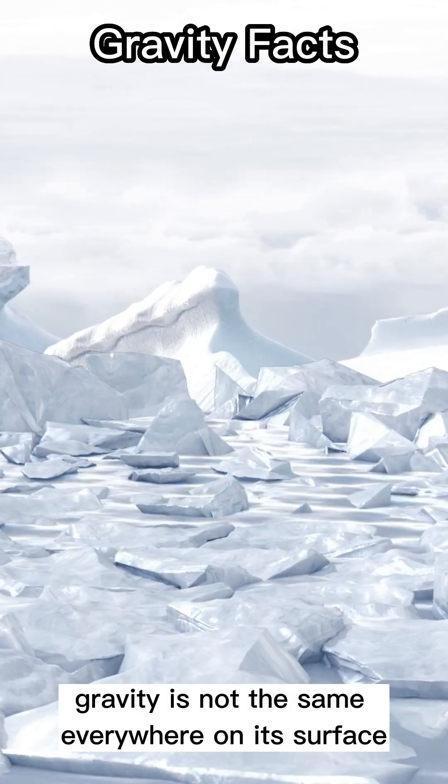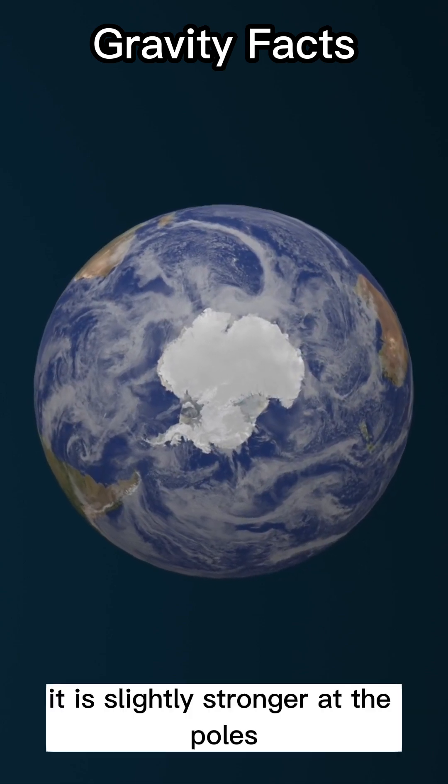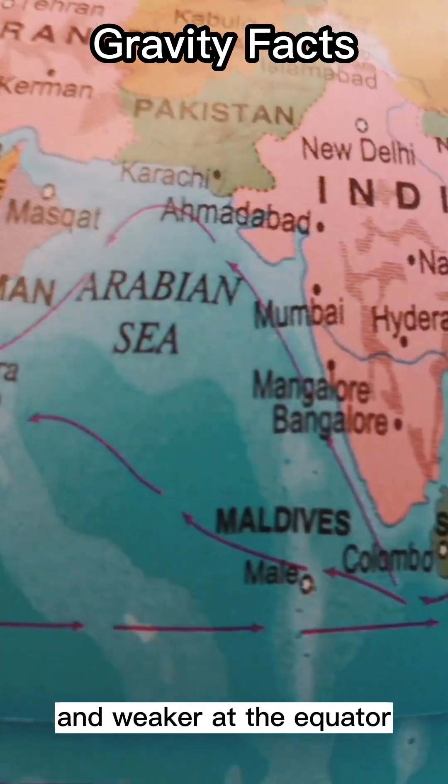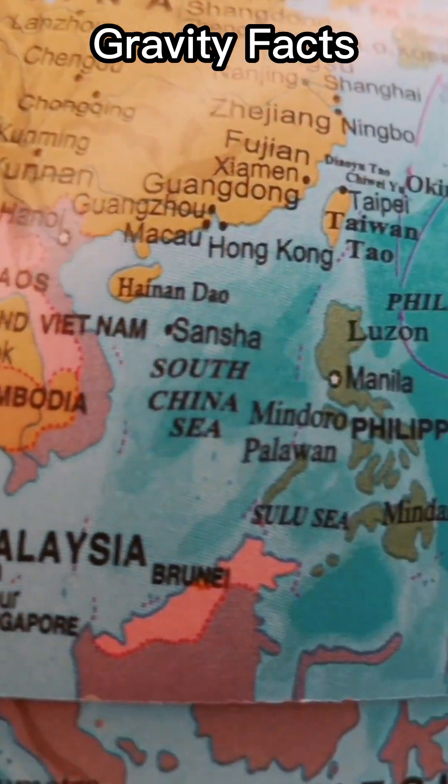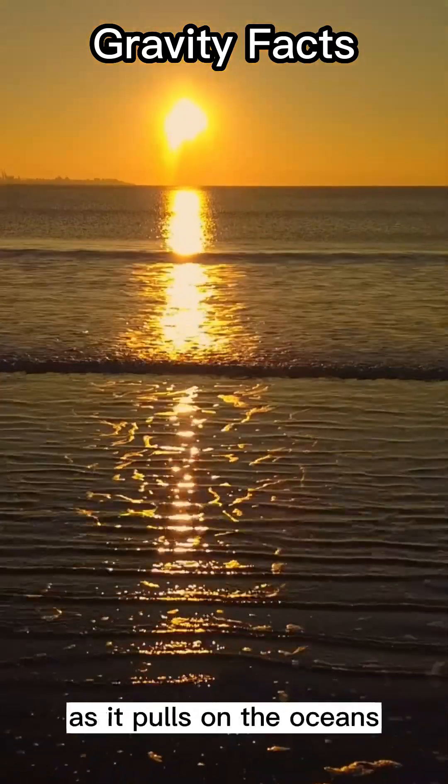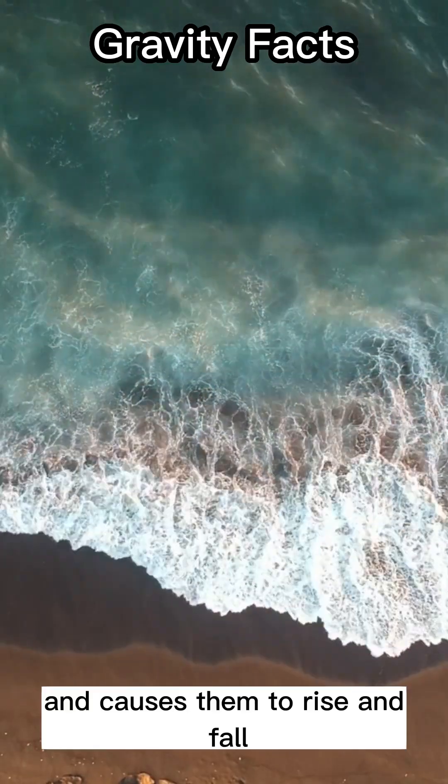Gravity is not the same everywhere on its surface. It is slightly stronger at the poles and weaker at the equator due to the Earth's shape and rotation. Gravity is what causes tides on our planet, as it pulls on the oceans and causes them to rise and fall.